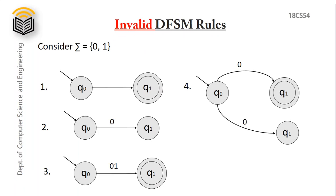Next, invalid rules for defining a DFSM. A transition occurring from Q0 to Q1 on no occurrence of a symbol is not valid. A machine with no accepting state is also invalid — it must contain at least one accepting state and one start state. Transitions must occur for a single symbol; any combination of two alphabet symbols is not accepted. Very importantly, for a given state there cannot be multiple transitions for the same symbol — this is not valid in DFSM.